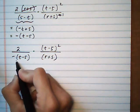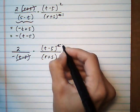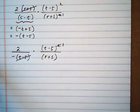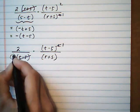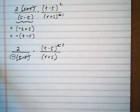t minus 5 on the bottom, one of them, cancels with one of them on top, leaving one on top. Don't forget this minus sign hanging out. We don't want to forget about it when we rewrite what we have now.